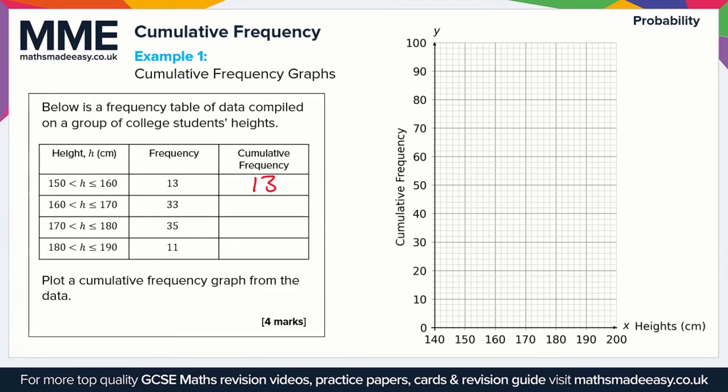Then for the next one, we have 33 for the next frequency, so the frequency so far is going to be 33 plus 13, and that's going to give us a value of 46. Then for the next bit, we're going to add this 46 to 35, 46 plus 35, and that's going to give us 81.